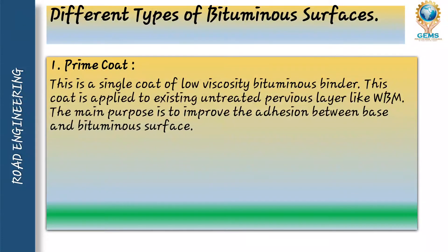Next is different types of bituminous surface. First is prime coat. This is a single coat of a lowest viscosity bitumen binder. This coat is applied to an untreated previously laid layer like WBM.